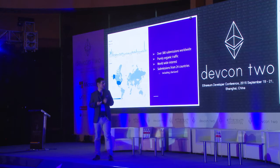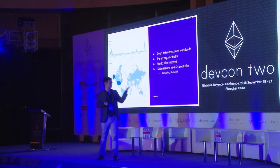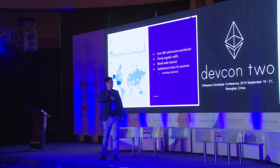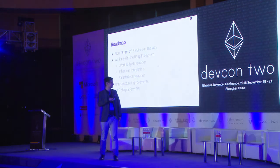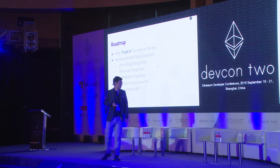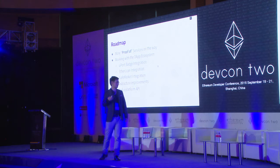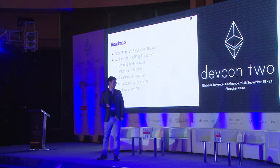We've been in production a few months now, and it's pretty fun to see where we're getting responses and interest. We've had over 300 submissions worldwide, purely organic traffic, with submissions from 24 countries — including Liberland, which I think is hilarious. We have a roadmap: we want to provide more proof-of services, and we're working with the DApp ecosystem — Uport for badge integrations, Ether Loan, Safe Market. We had lunch with Griffin and might do a Balance 3 integration as well.